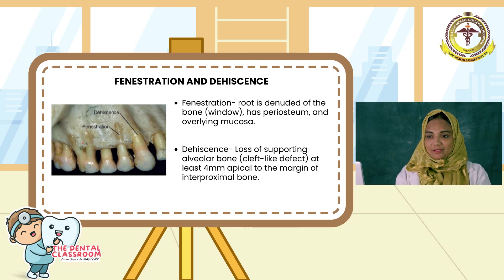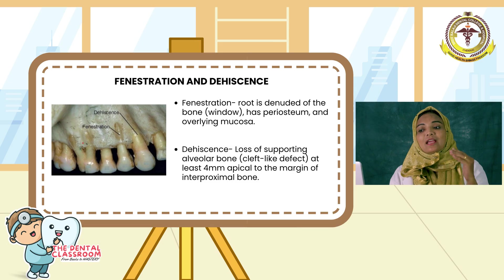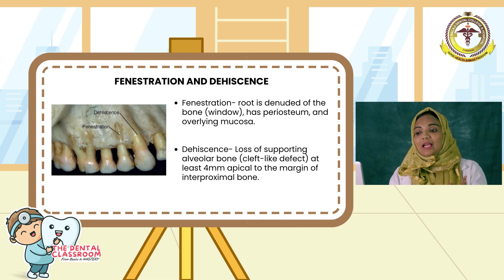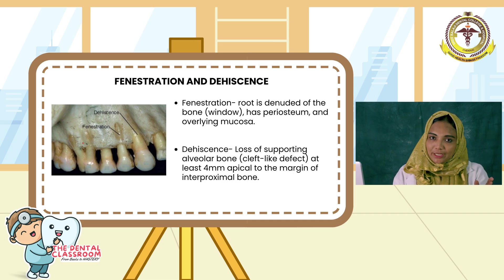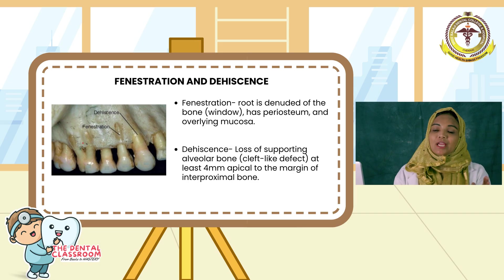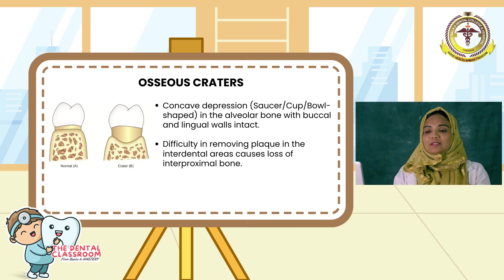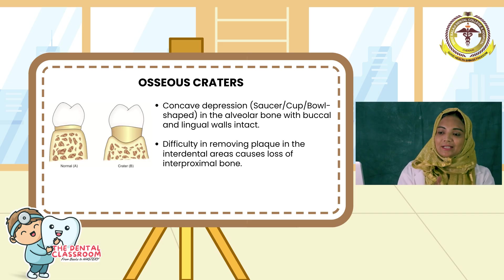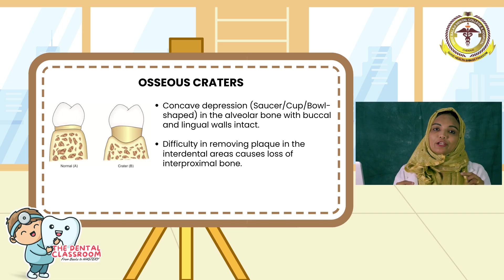Next is fenestration and dehiscence. You can see in the figure — fenestration is a window-like defect where there is denudation of the alveolar bone but the periosteum and overlying mucosa remain. Dehiscence is a cleft-like defect with loss of supporting alveolar bone at least 4 mm apical to the margin of the interproximal bone. Next is osseous craters: they are concave depressions in the alveolar bone with buccal and lingual walls intact. Difficulty in removing plaque in the interdental areas causes this loss of interproximal bone.